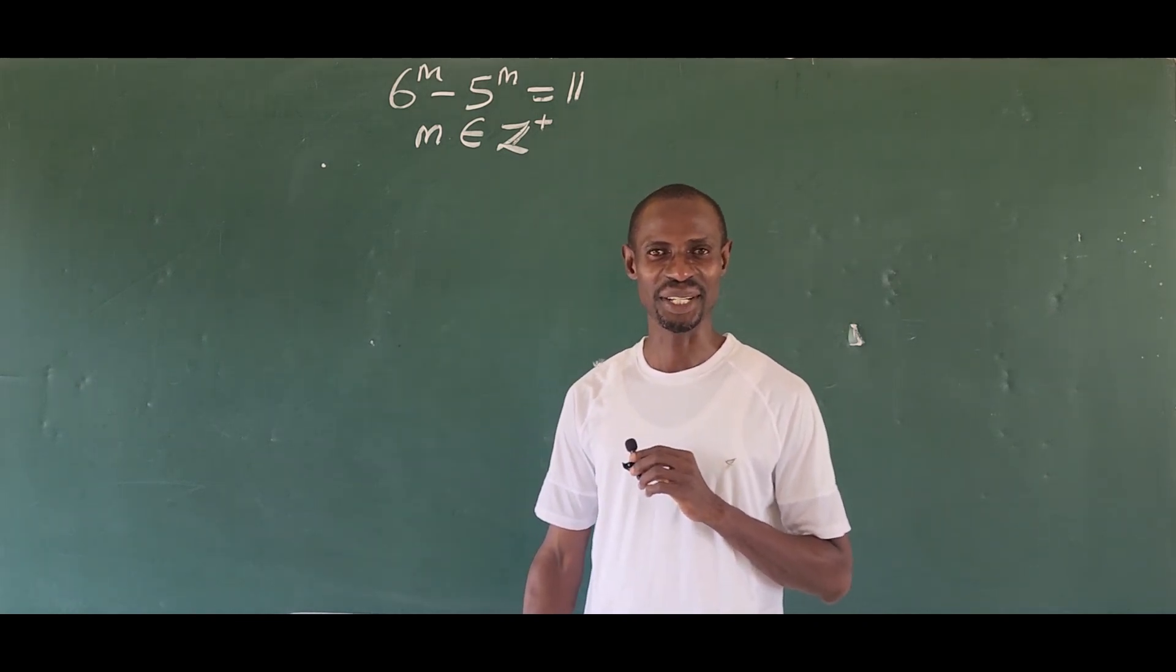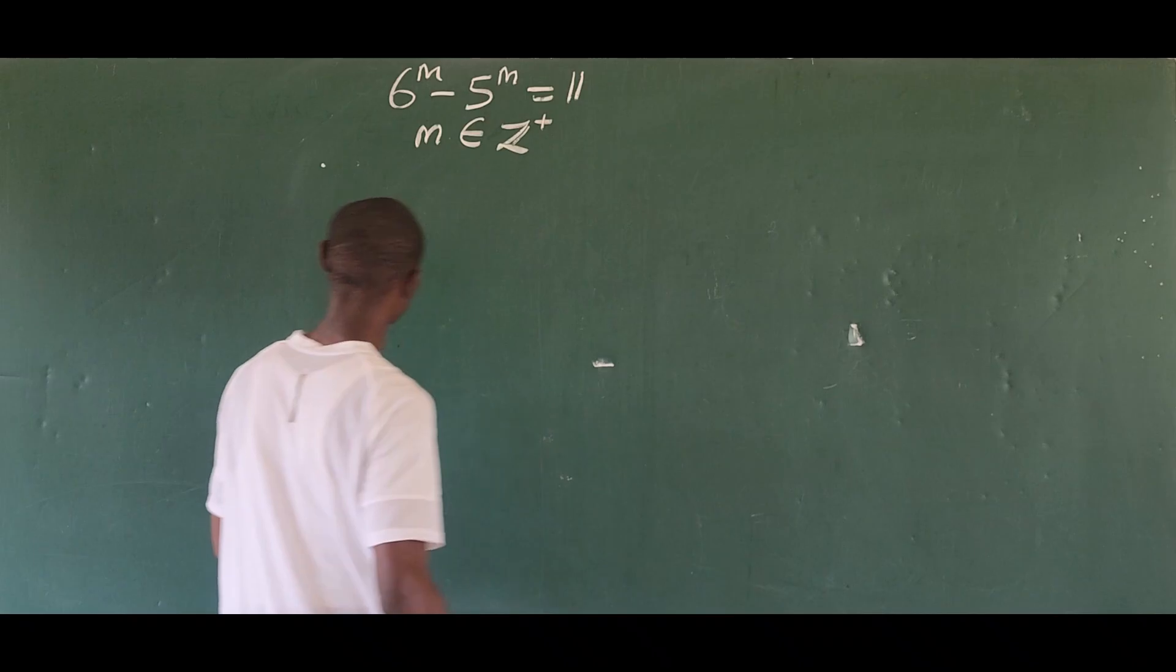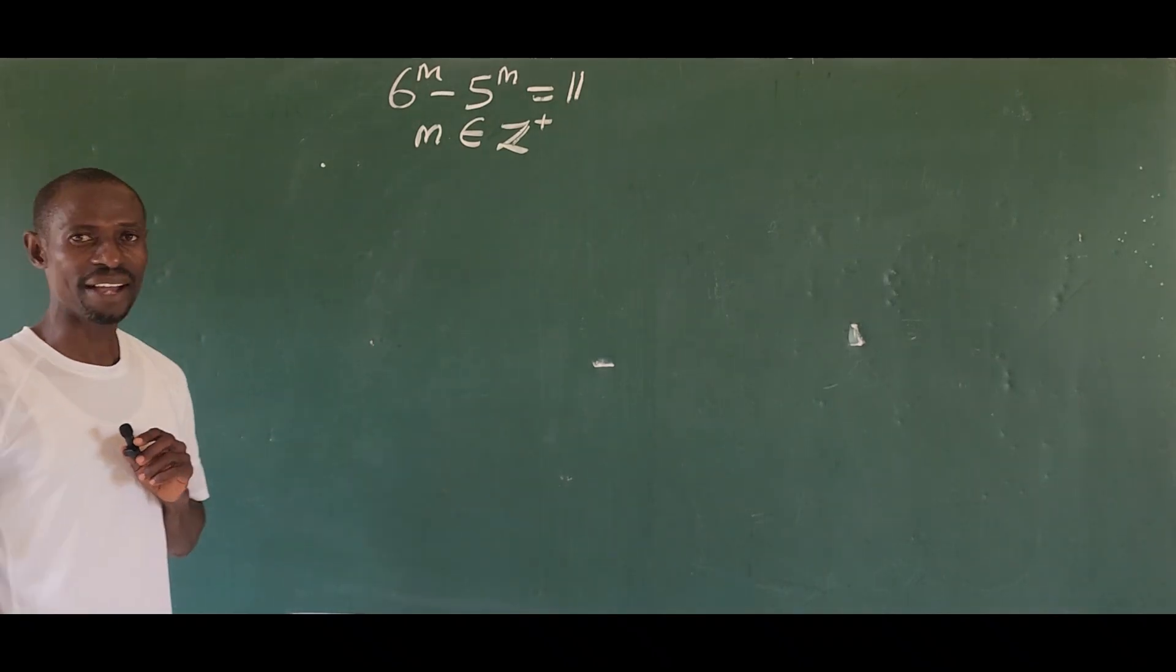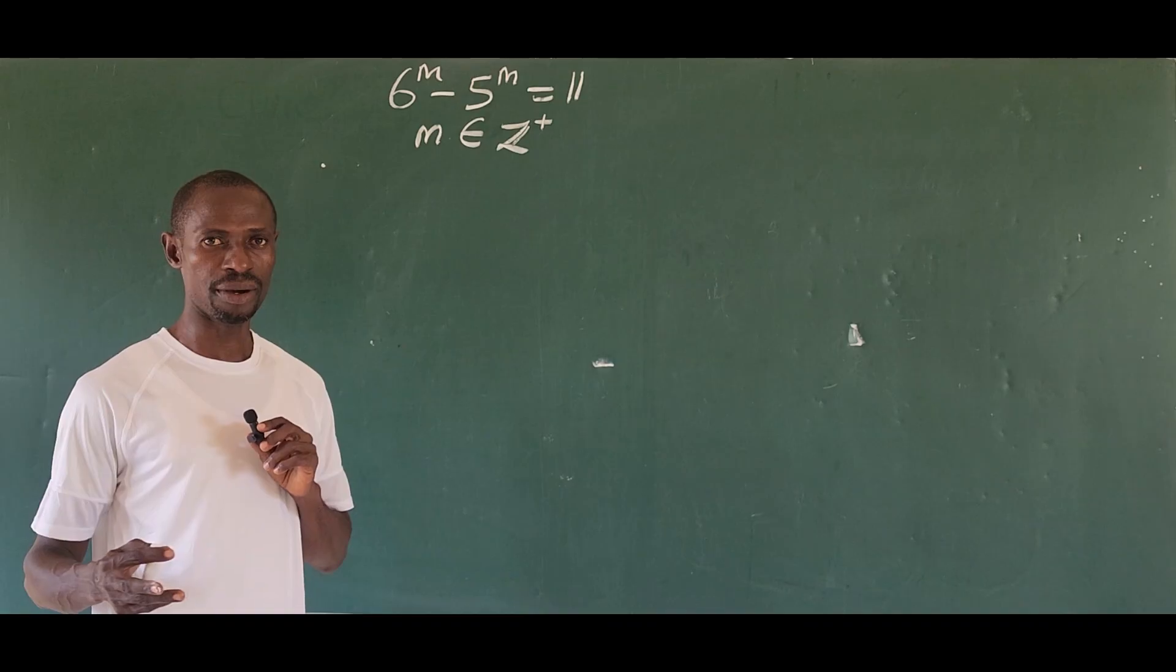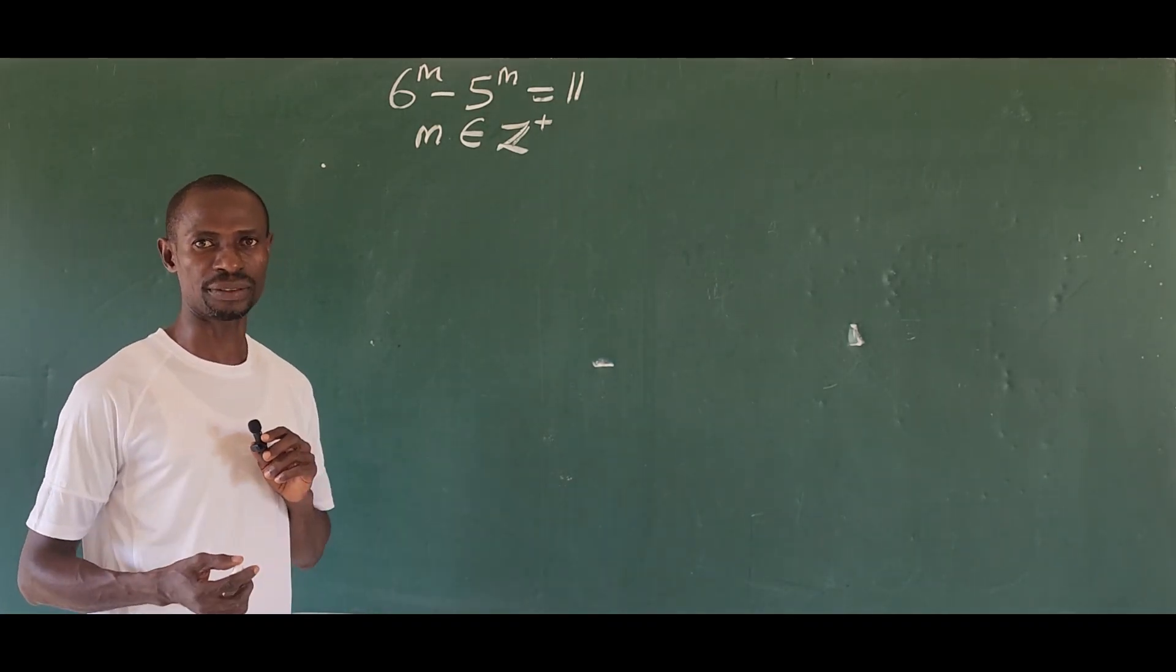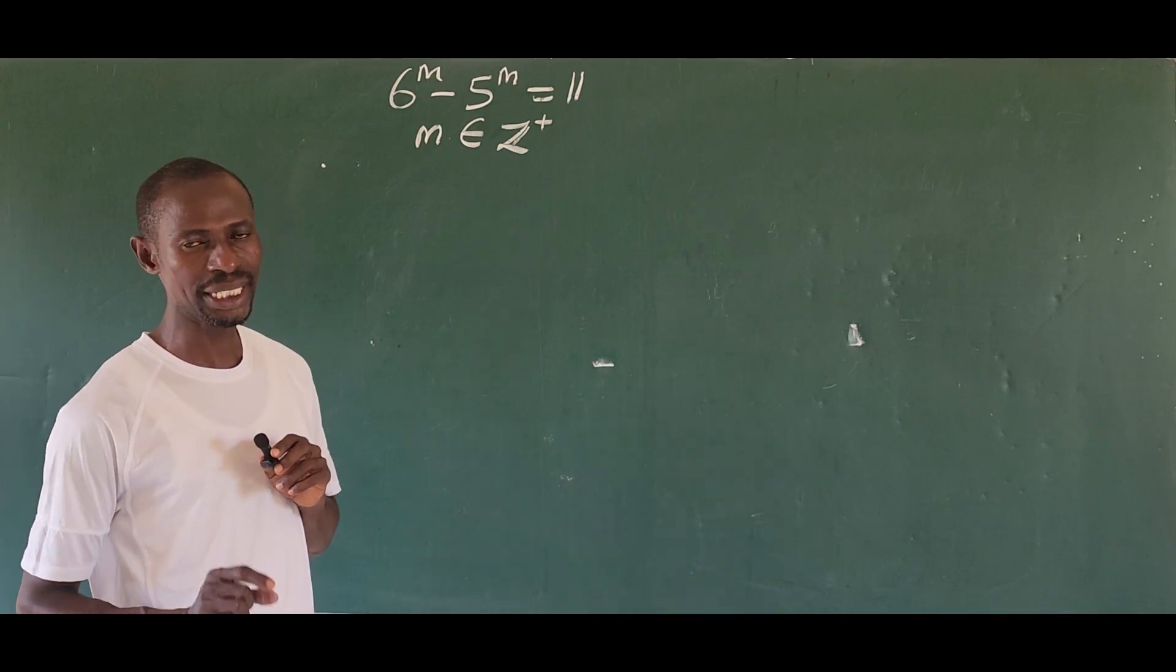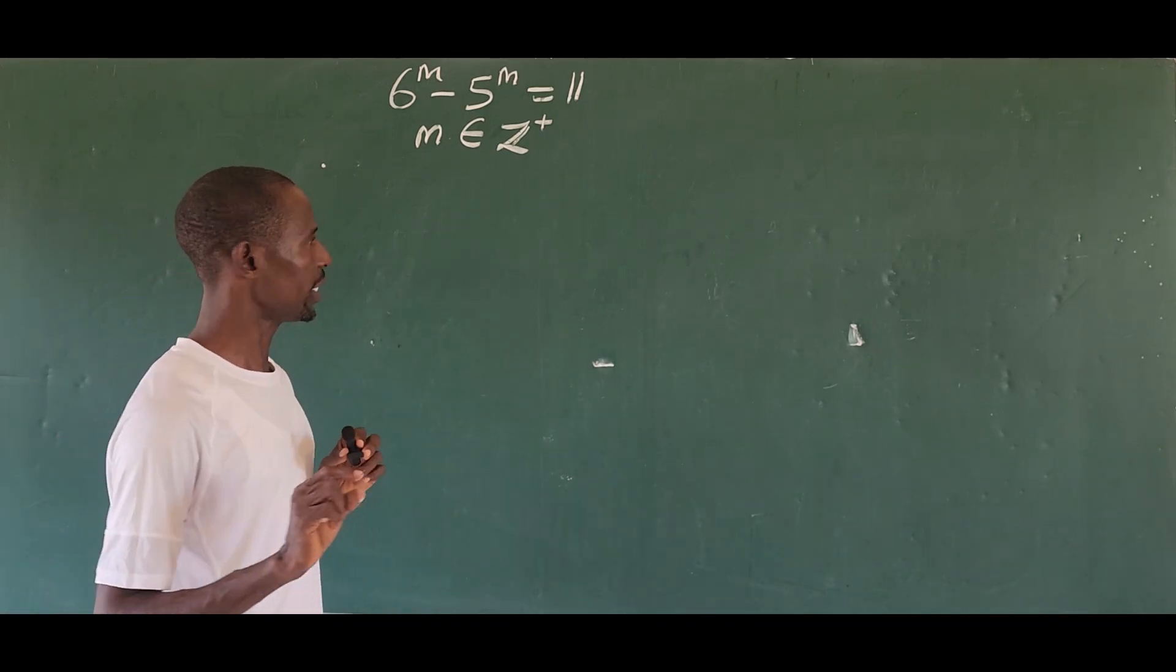Hello and welcome to the smart class. Today we have this challenge before us here. The question is 6 to the power of m minus 5 to the power of m equal to 11, and here we are told that m belongs to a set of positive integers. So we have to look for the integer solution of this challenge and the positive one of it.